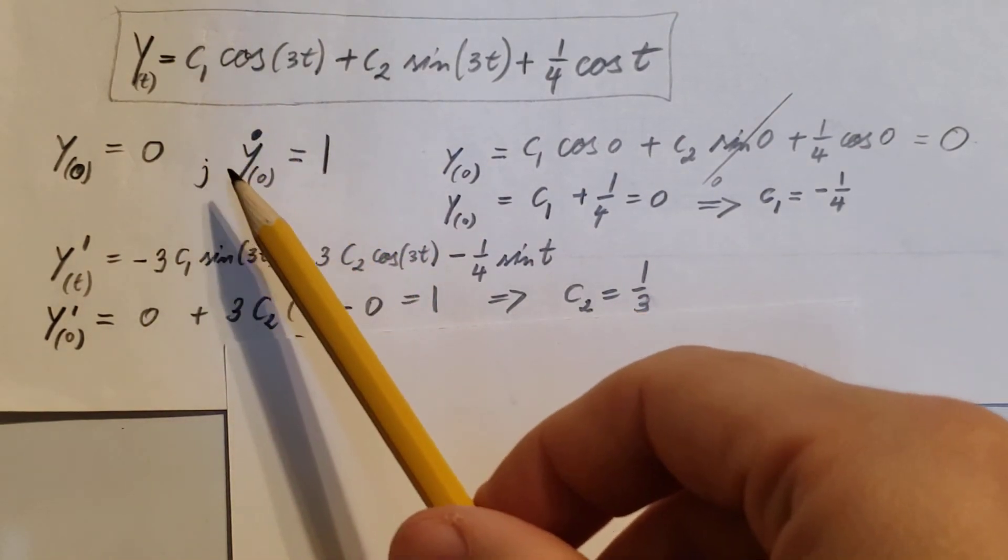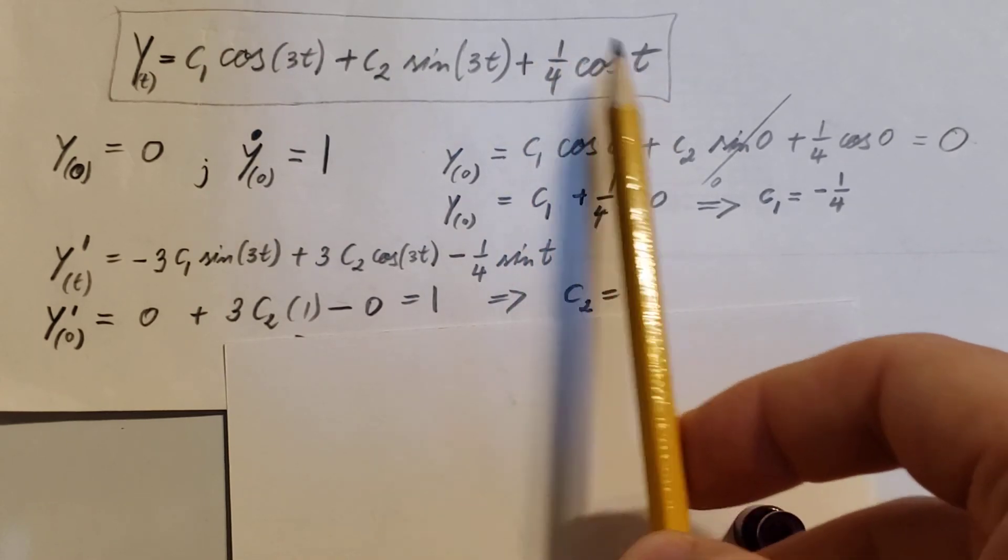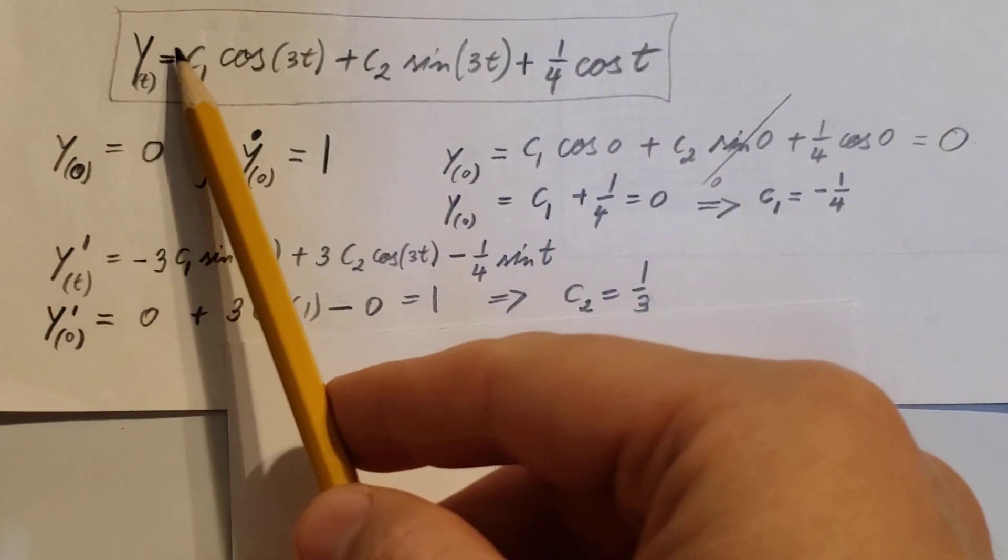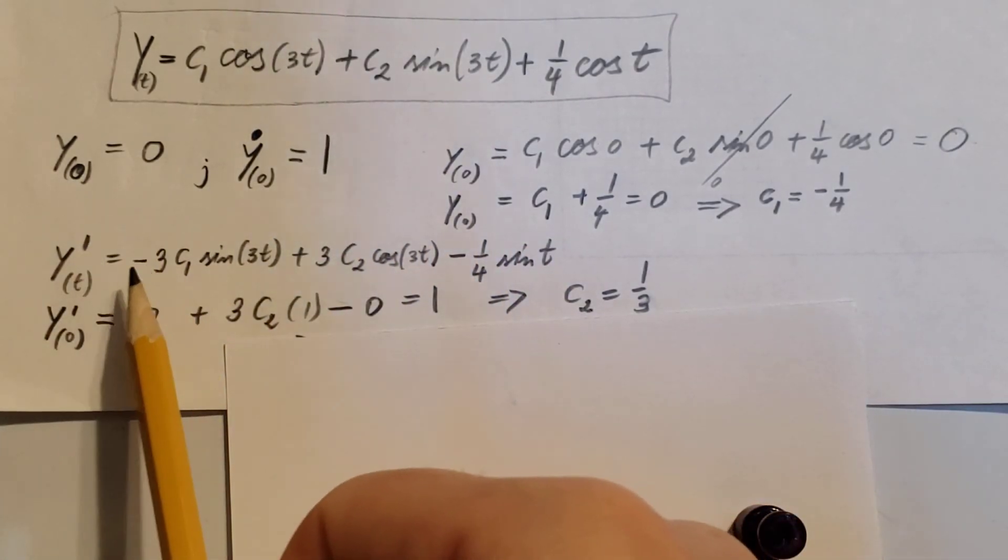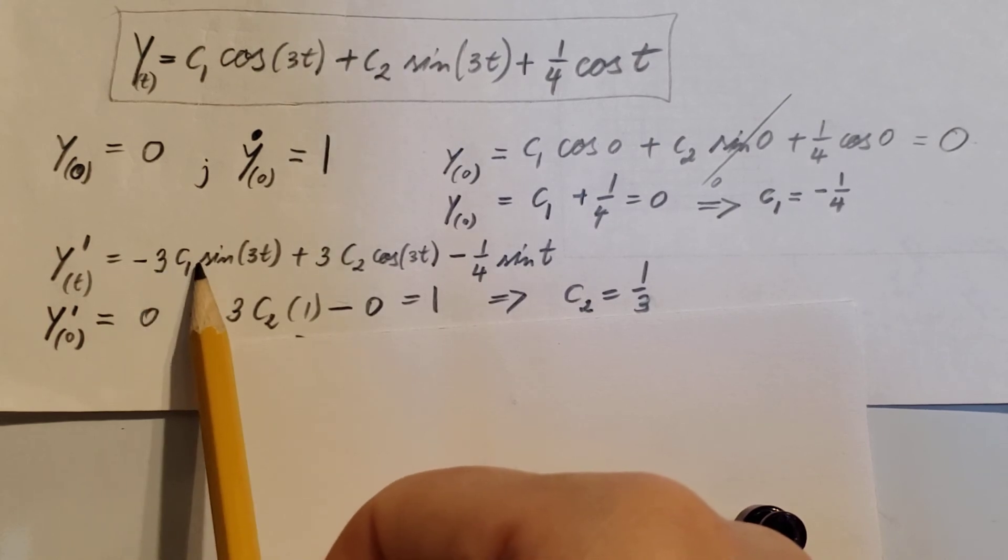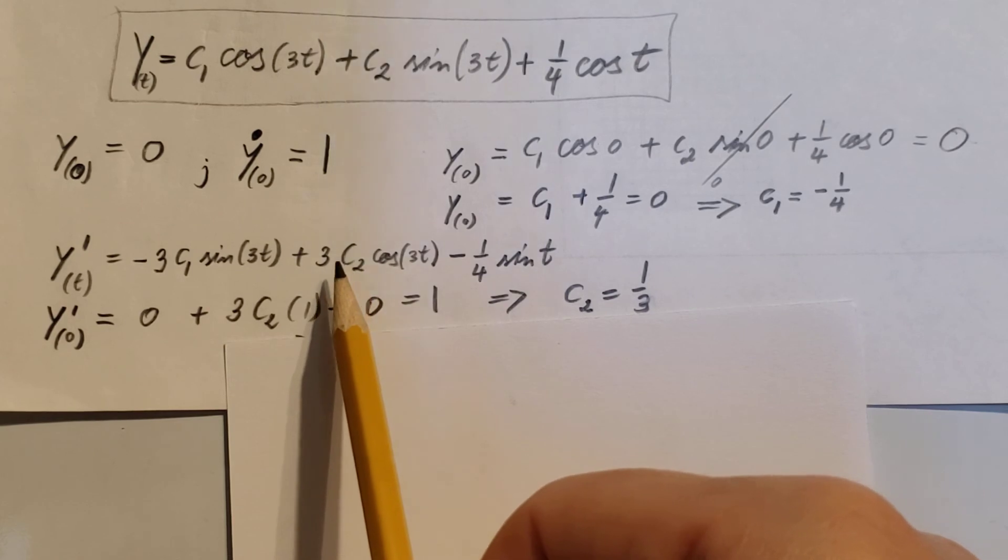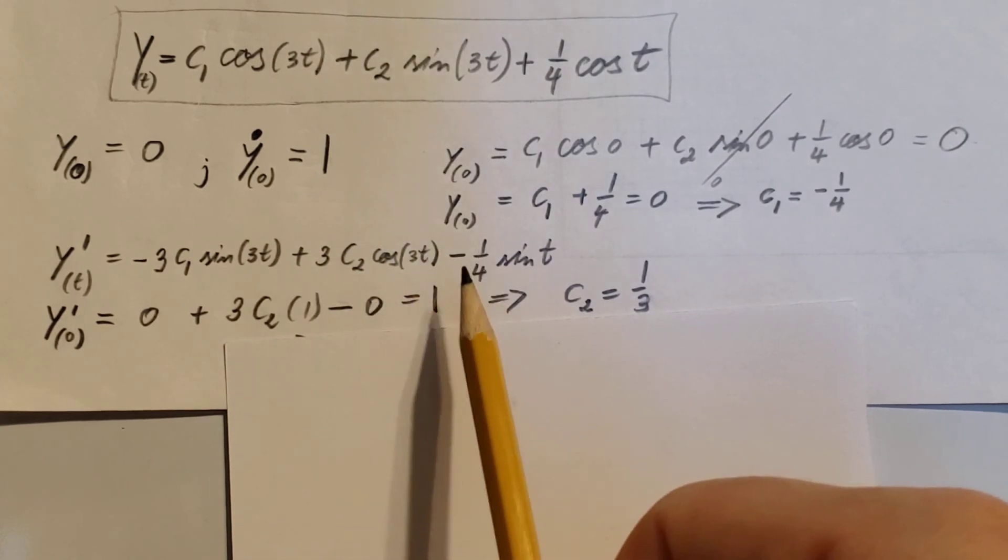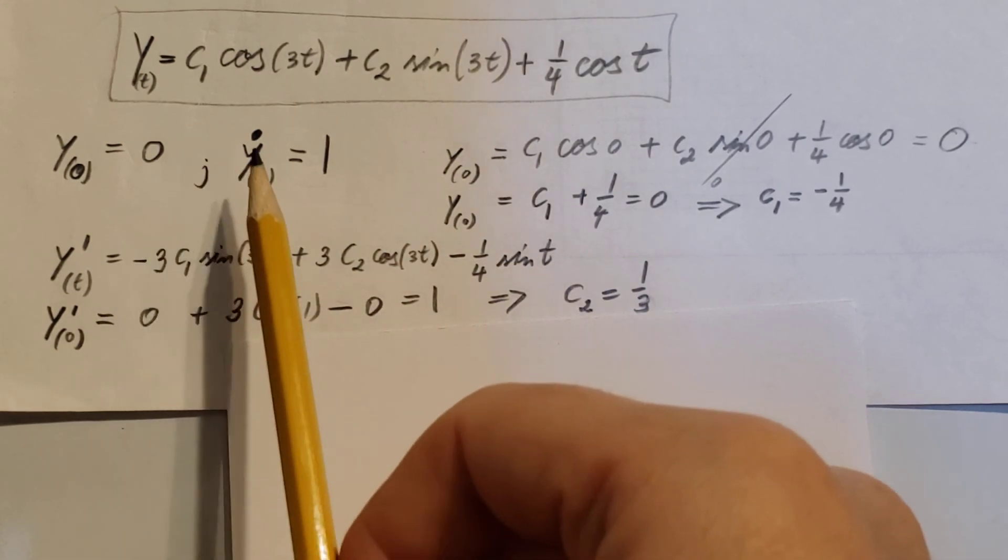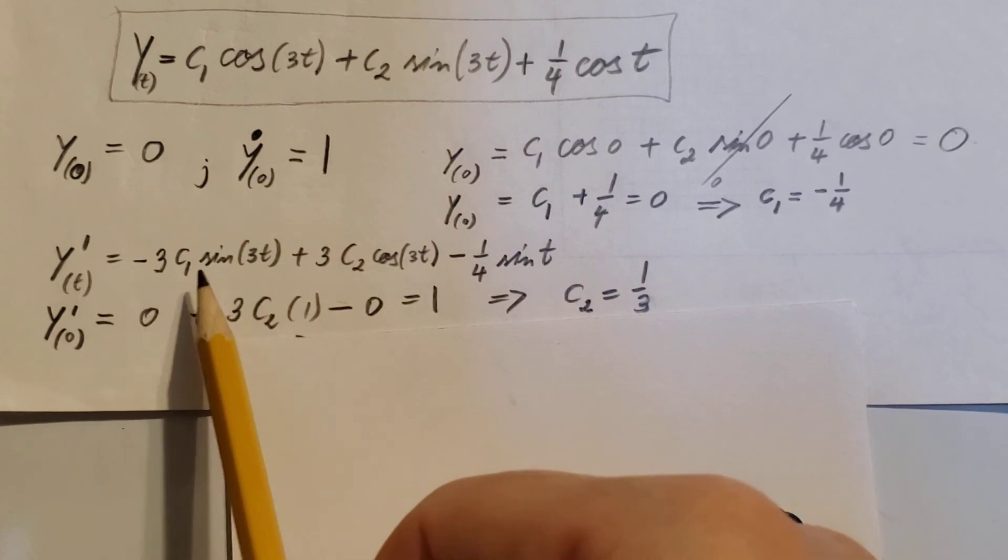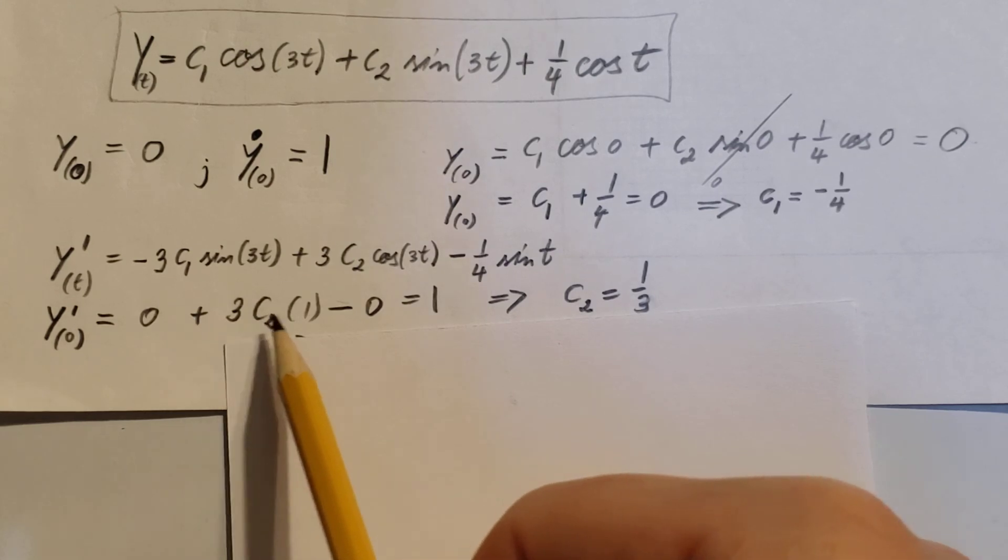To use this part, we take a derivative of this. The derivative of our solution is minus three c1 sine 3t plus three times c2 cosine 3t minus one-fourth sine t. Plug in zero instead of all the t's and it equals one. This will help us find that c2 equals one-third.